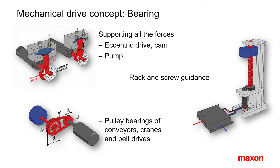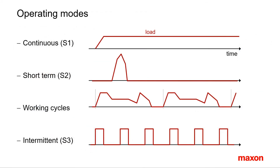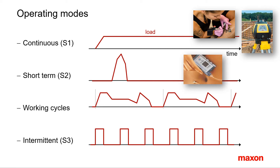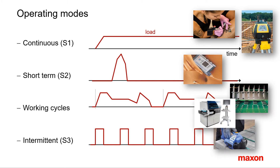The orientation with respect to gravity might also be a valuable information. The required motion can lead to different load scenarios. Basically, four operation modes can be differentiated: continuous operation, where the drive accelerates once and moves with a constant load for a long period — examples are laser beam deflection or a tattoo gun; short-term operation, with intense load during a short period followed by a very long standstill — an example is an insulin pump; cyclic operation, characterized by a relatively short variable load profile continuously repeated — typical examples include pick and place; and on-off operation, a special case of cyclic operation.